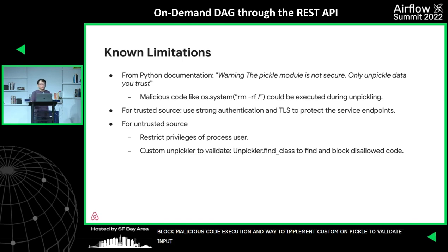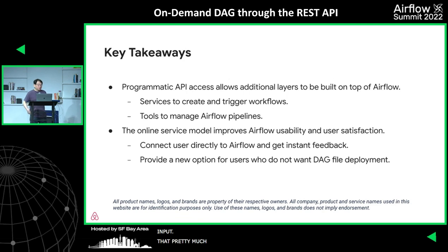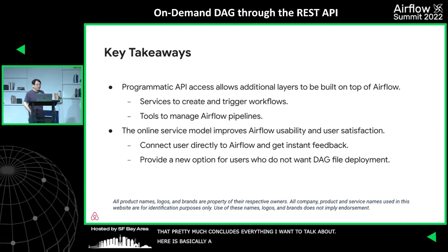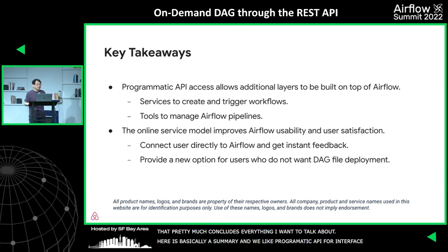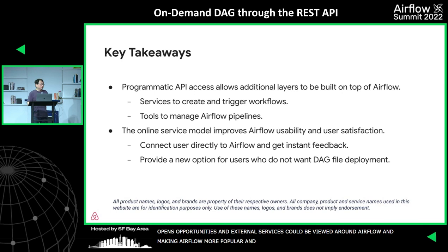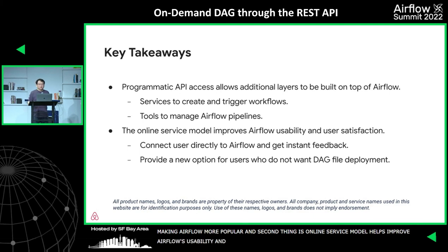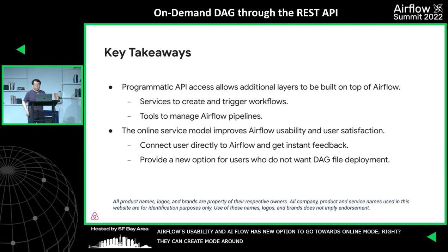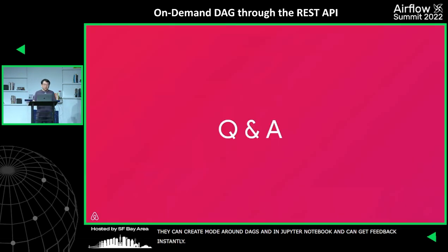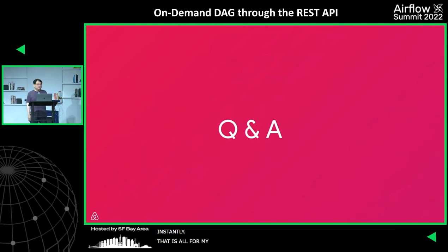In summary, we really like having a programmatic API interface for Airflow because it opens up new opportunities for external services and tools to be built around Airflow, making Airflow more popular. The online service model helps improve Airflow's usability — users now have a new option to create, modify, and run DAGs in a Jupyter notebook and get feedback instantly. That concludes my presentation. Thanks for listening.